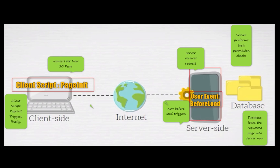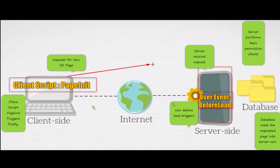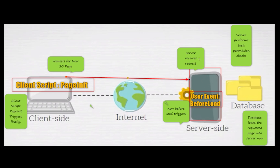I have a client script deployed on my sales order record and the user event script beforeLoad has also been deployed on the sales order record. When I request a new sales order page, the NetSuite application server receives the request, performs basic permission checks to verify whether this role has access to the page, and then the database loads the requested page to the server. Since user event is a server-side script, this processing happens on the server side.